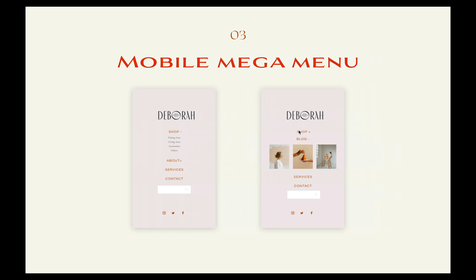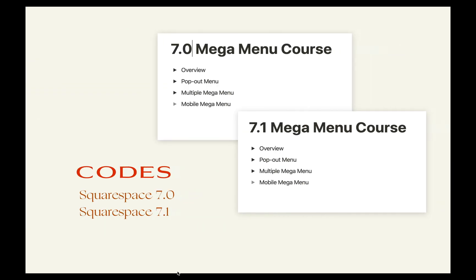Our third project is the mobile mega menu, which is also a way to organize your content. You can add subcategories and photos that lead to other pages. This course is applicable to both 7.0 Brine — any template within the Brine family in 7.0 — and also to all templates in Squarespace 7.1. Upon purchase of the course, you'll have access to two modules: one for 7.0 and one for 7.1.